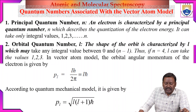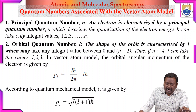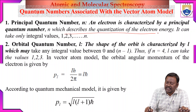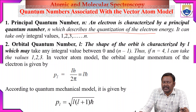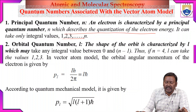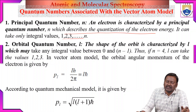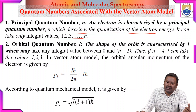The first quantum number is the principal quantum number, indicated by n. An electron is characterized by a principal quantum number n, which describes the quantization of the electron energy. The energy of the electron revolving around the nucleus is quantized in terms of n. It can take only integral values: 1, 2, 3, up to n. For example, if the value of n is 4 for any particular atom, that means there could be 4 orbitals, so electrons are arranged in four orbits.